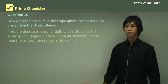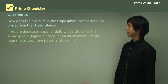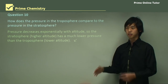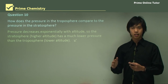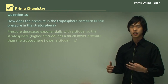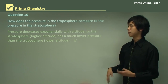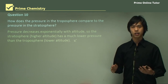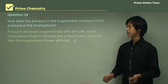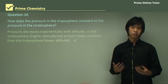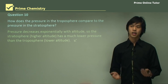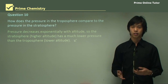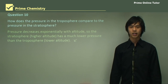This concludes the lesson on the structure of the atmosphere. Today we've looked at the structure of the atmosphere, what the layers are, what each part does for us as living organisms, and how pressure interacts with altitude. Next time we'll look at what pollutants are entering the atmosphere and how humans are affecting the atmosphere around us. I look forward to seeing you at our next lesson.